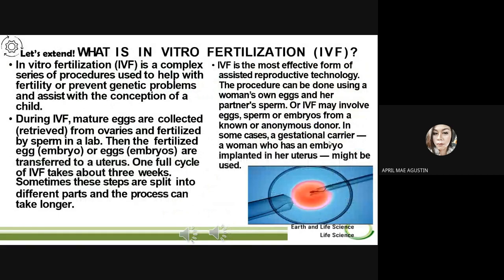Let's extend. What is in vitro fertilization, also known as IVF? In vitro fertilization is a complex series of procedures used to help with fertility, prevent genetic problems, and assist with the conception of a child. During IVF, mature eggs are collected or retrieved from ovaries and fertilized by sperm in a lab. Then the fertilized egg, or embryo, is transferred to a uterus. One full cycle of IVF takes about three weeks. Sometimes these steps are split into different parts and the process can take longer.